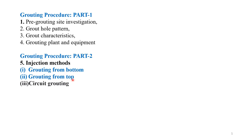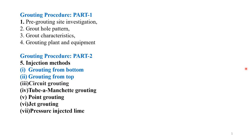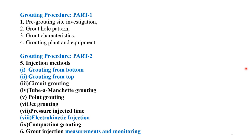The injection procedures include: grouting from bottom, grouting from top, circuit grouting, tube-a-manchet grouting (also called TAM grouting), point grouting, jet grouting, pressure injected lime, electro-kinetic injection, and compaction grouting. The 6th topic is grout injection measurements and monitoring. All 9 injection method topics and the measurements and monitoring topic will be covered today.